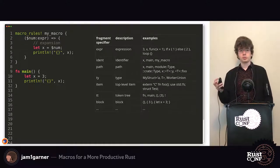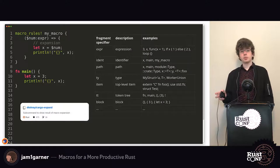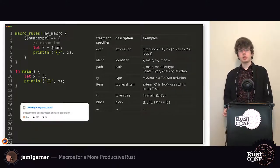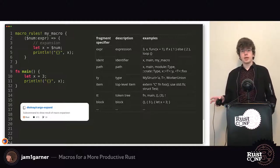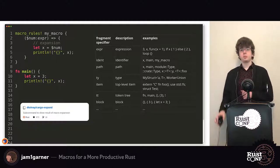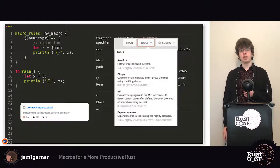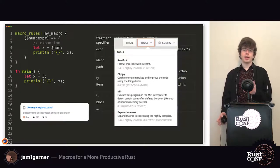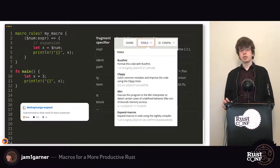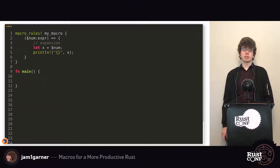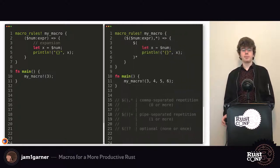If you want to expand macros on your own, there are two great resources. There's cargo-expand, a cargo subcommand made by David Tolney, which lets you see what your macro expands into. You also have the ability on the Rust Playground — at the bottom of the tools section — to expand your macros. Highly recommend using the Rust Playground to play around with that.